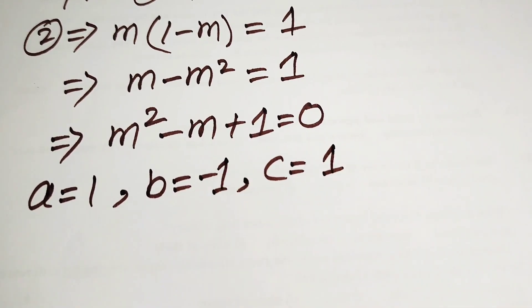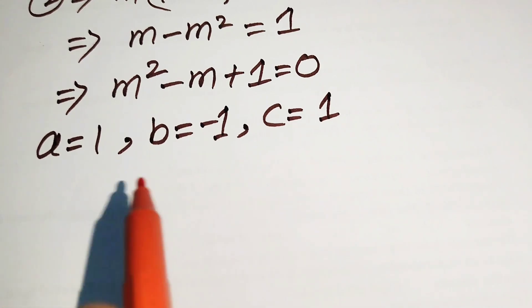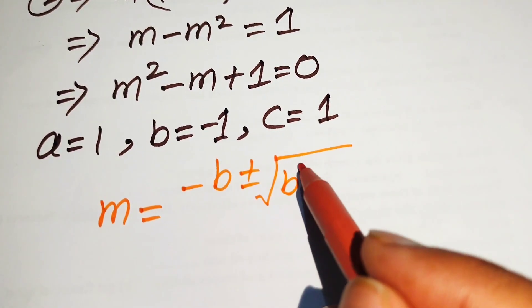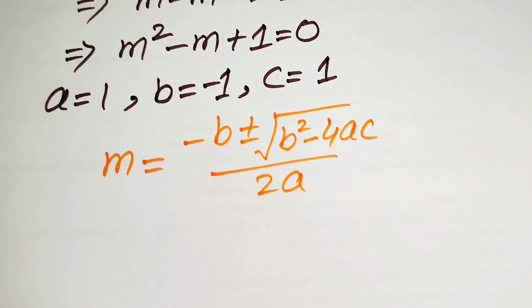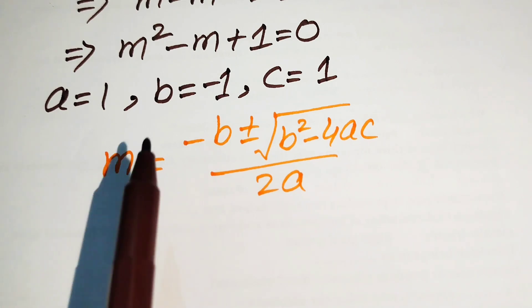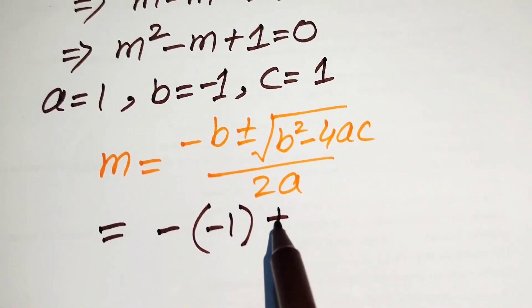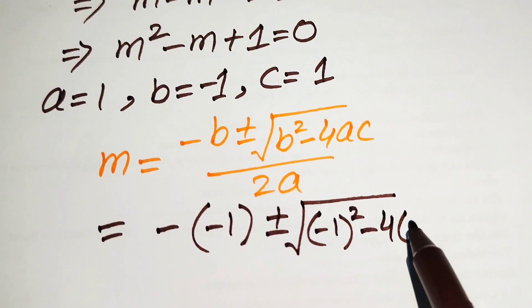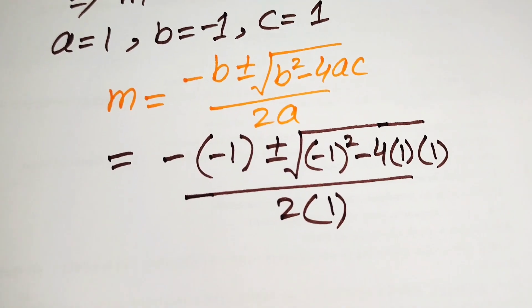The quadratic formula is m equals to minus b plus or minus square root of b squared minus 4ac, divided by 2a. Now we substitute the values: b is minus 1, so we have minus times of minus 1, plus or minus square root of (minus 1) squared minus 4 times 1 times 1, all divided by 2 times 1.